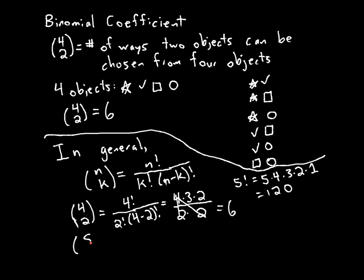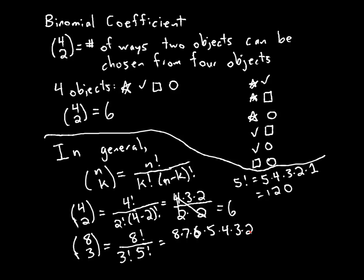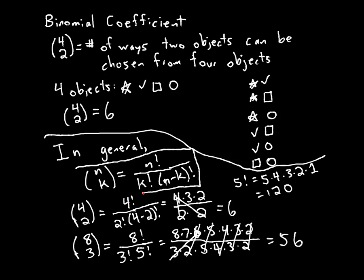Let me look at one more example of computing a binomial coefficient by hand. If I have 8 choose 3, that's 8 factorial divided by 3 factorial times 5 factorial, because 8 minus 3 is 5. Expanding this out: 8 times 7 times 6 times 5 times 4 times 3 times 2, divided by 3 times 2 times 5 times 4 times 3 times 2. The five times four times three times two cancels, and the six is the same as three times two, so this is just 8 times 7, which is fifty-six. This formula will show up in our analysis of the binomial distribution.